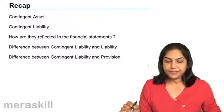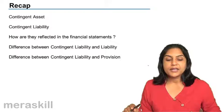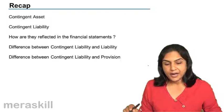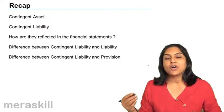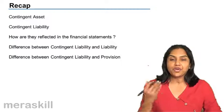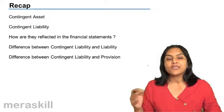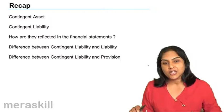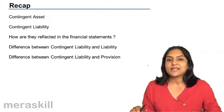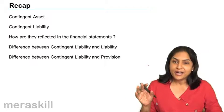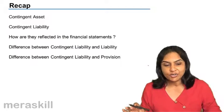A quick recap: a contingent asset is a probable asset which may arise on the happening or non-happening of some future event. There could be economic benefits or a flow of economic benefits into the entity. However, we follow the concept of prudence and do not recognize any asset or income unless we are fairly certain — income is recognized only when it is actually realized.